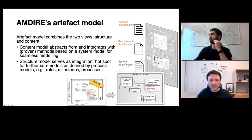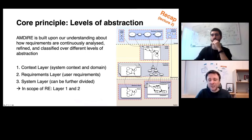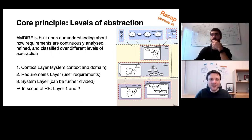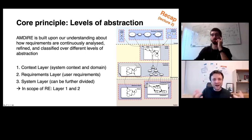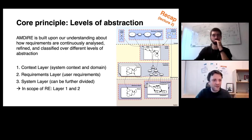Last but not least, the process elements and role model are also part of MDIA. Every artifact — the context specification, requirements specification, system specification — has at least one role with certain required skills and responsibilities. The context specification is in scope of a role called business analyst, supposed to be a domain expert. The requirement specification is in scope of a requirements engineer, who mediates between the business analyst and the system architect.